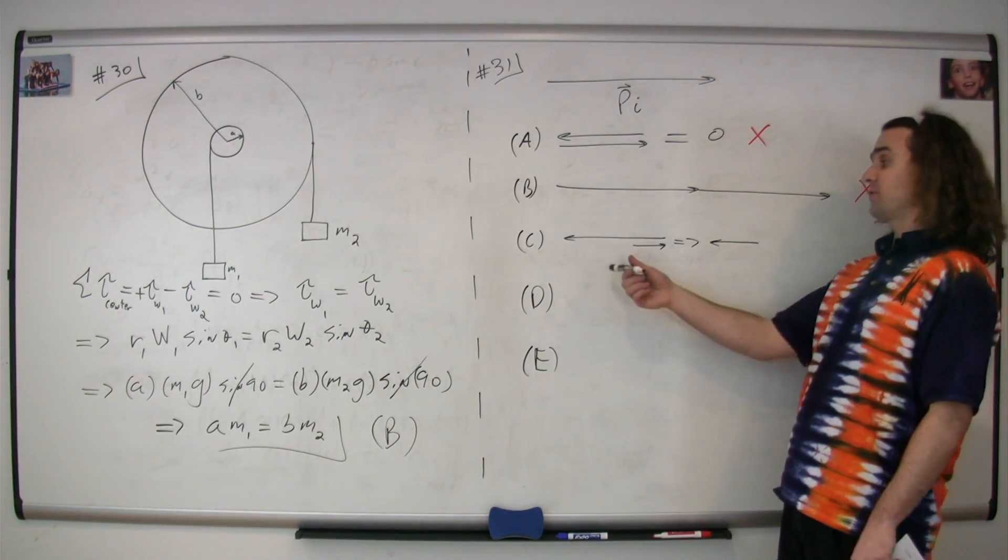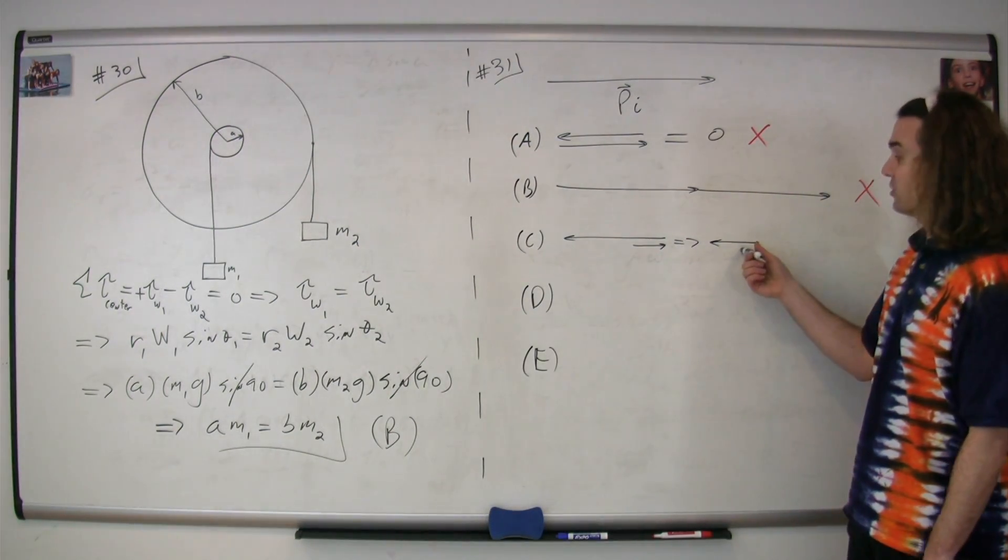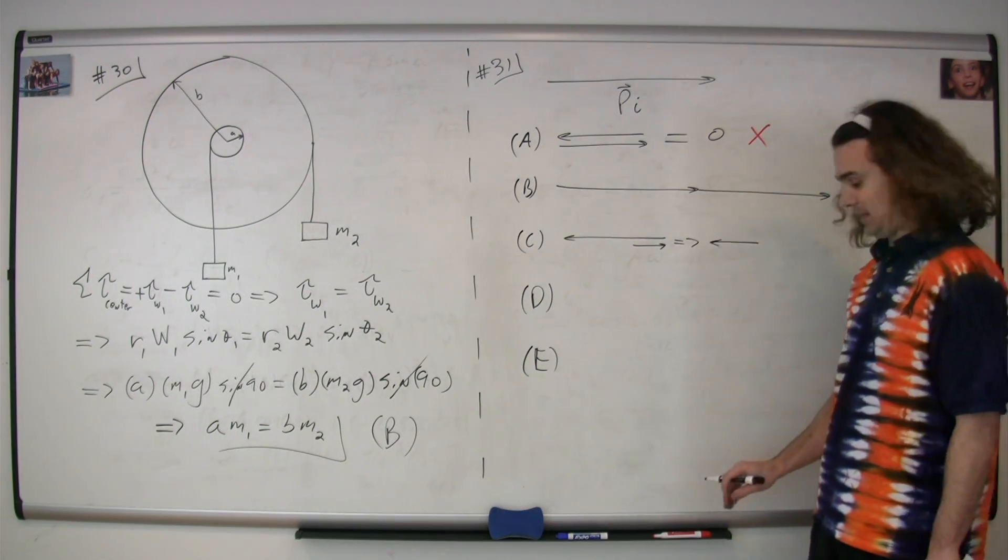When you do tip to tail vector addition for C, you get something that's actually small and to the left, so that can't be it.